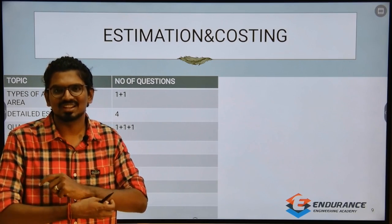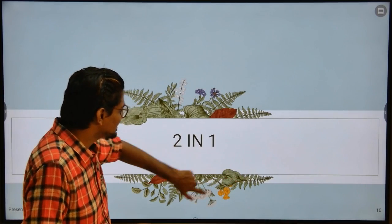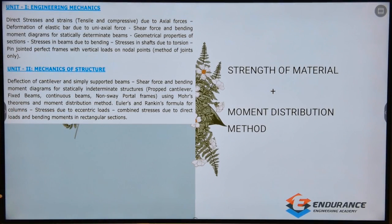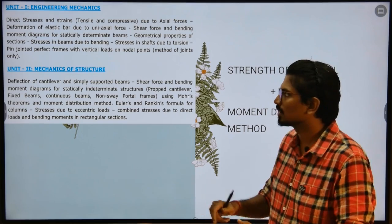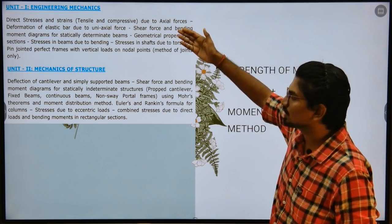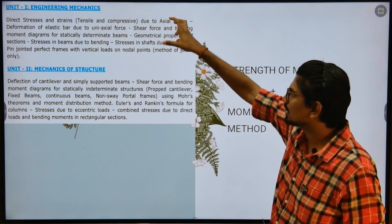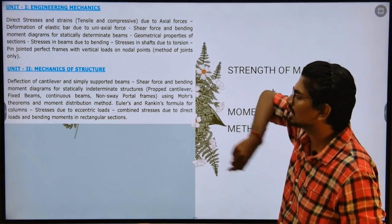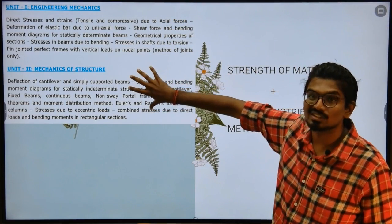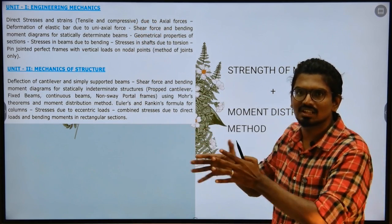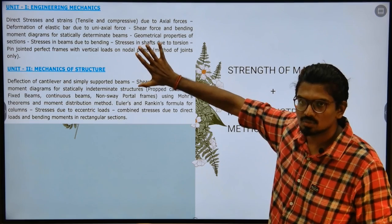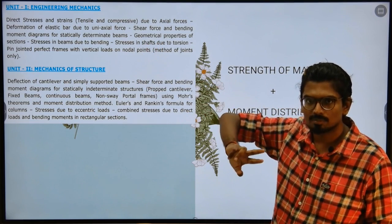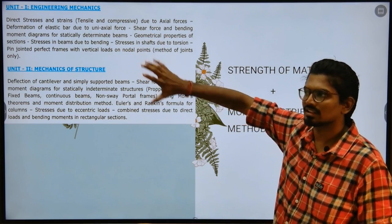With the right strategy, we will be able to get two subjects with a single effort. Unit one is engineering mechanics and unit two is mechanics of structures — these are from the TNPC and JD syllabus. If you observe properly, the syllabus topics relate to each other — about 40 to 50 percent overlap. So you can treat these two units almost as a single unit.